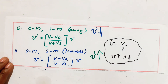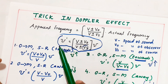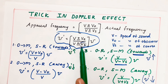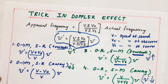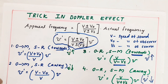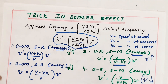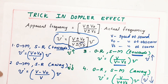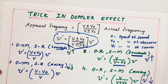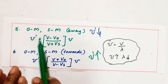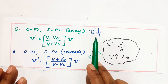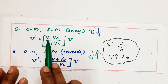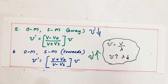Many people get confused about where to put plus and where to put minus. It is very simple. You remember the standard formula: nu dash equals V plus or minus V_O by V plus or minus V_S, into nu. Check which term is moving — is it in the numerator or denominator? Both moving away: V minus V_O by V plus V_S, into nu. Both moving towards: V plus V_O by V minus V_S, into nu.